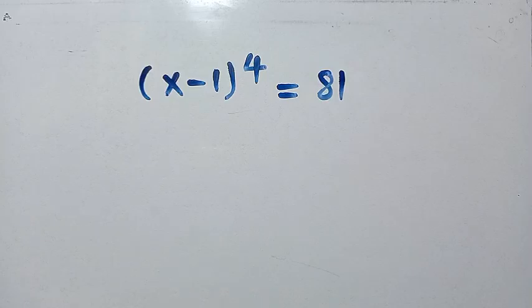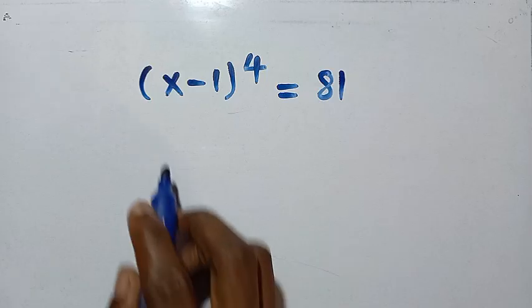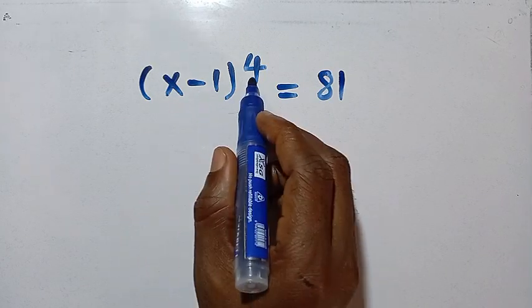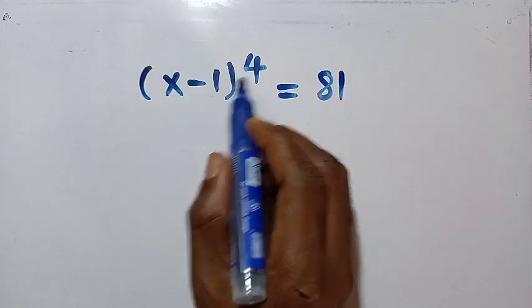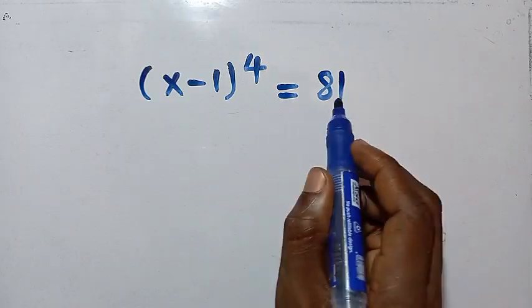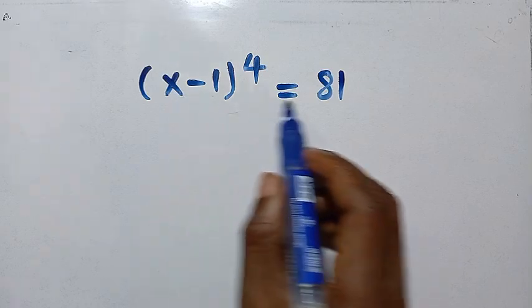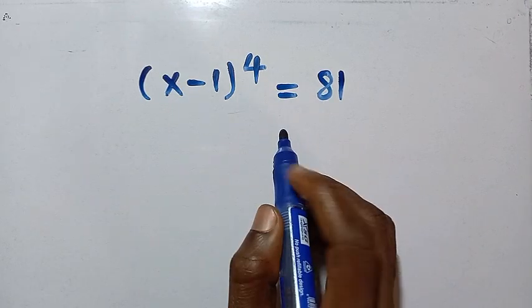Good day viewers and you are welcome. How to solve these nice algebraic equations? We want to look for the values of x that will make the left hand side equal the right hand side. We are given x minus 1 bracket to the power of 4 equals 81. We check for the values of x for these two sides to be equal.